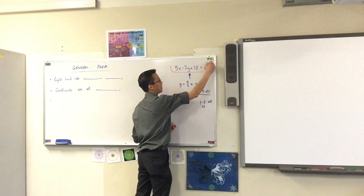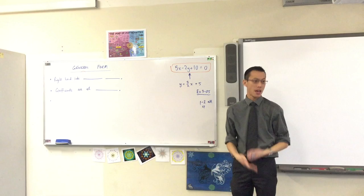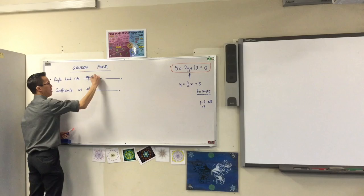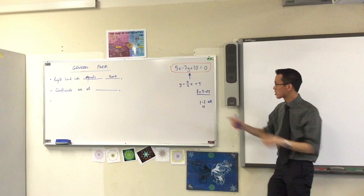Now, 5x minus 2y plus 10 equals 0 is exactly written in general form. I want to tell you the three characteristics that make it general. Firstly, the right-hand side, do you see what it's equal to? It's equal to 0. That's the first important thing. Just like in this form, the left-hand side equals y. So look for that. That's your first signal.